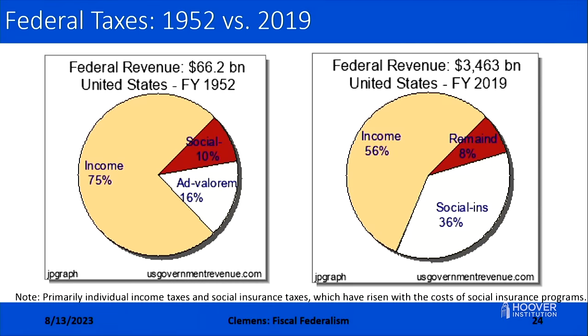Let's look at the taxation side. On federal taxes, with snapshots from 1952 and 2019: as suggested by the core pillars of fiscal federalism, the federal government is the entity that relies significantly on the relatively progressive individual income tax. In 1952, the progressive income tax accounted for 75 percent of federal revenues; by 2019 that share had declined to 56 percent, still a majority. The decline reflects the substantial increase in payroll taxes used to finance Medicare and Social Security, whose costs have escalated substantially — so social insurance contributions have risen as a piece of the federal revenue picture.